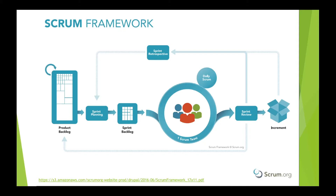The team pulls items from the top of the backlog into a sprint during sprint planning, which results in a detailed plan called the sprint backlog. The sprint backlog is created based on the team's historical velocity, which represents the rate at which they produce value. As the team executes the sprint, they meet daily at the daily scrum to discuss what was done the previous day, address blockers, adjust the plan, and determine what will be done the following day.